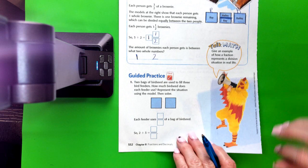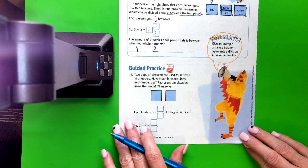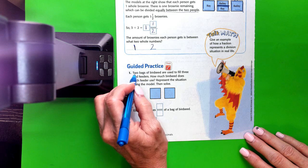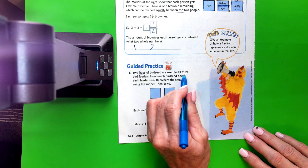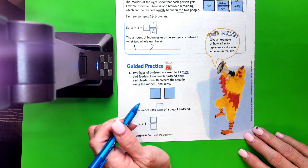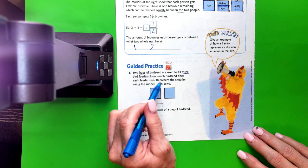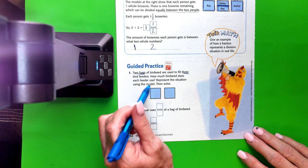Alright, let's do the first guided practice. 2 bags of birdseed are used to fill 3 bird feeders. How much birdseed does each feeder use? It says, represent the situation using the model. So these are our 2 bags of birdseed.